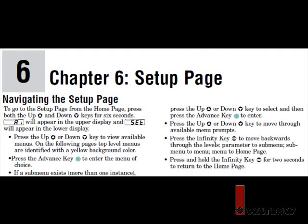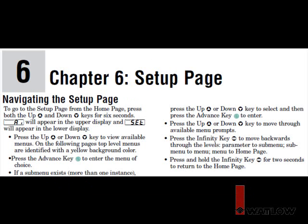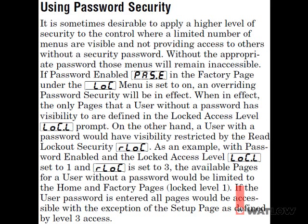The following procedure requires entering the setup page. Use caution while in the setup page so that you do not change other parameters, as unintended changes can have significant impact to your process. If the setup page is not accessible using this method, a lockout feature may be in effect. Contact the original equipment manufacturer or systems integrator if access is denied, as they may have implemented a password to prevent accidental changes.